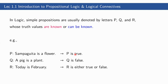In logic, simple propositions are usually denoted by letters P, Q, and R, whose truth values are known or can be known. Let's have proposition P: 'Sampagita is a flower.' Since we know that Sampagita is indeed a flower, P is true. Next, Q: 'A pig is a plant.' We know that a pig is an animal and not a plant; hence Q is false. And then R: 'Today is February.' R is either true or false because it is not stated when the original statement was made.